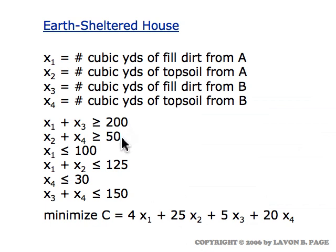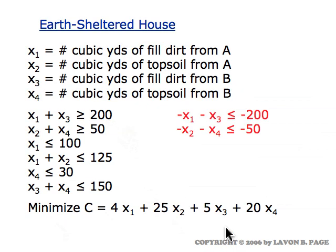Notice that our first two constraints are greater than type constraints. So they make this a non-standard problem. Of course the fact that we're minimizing also makes it a non-standard problem. With those first two constraints we need to multiply each by minus one to turn it into a less than or equal type constraint. The other four constraints are already less than or equal type constraints so they're fine as they stand.